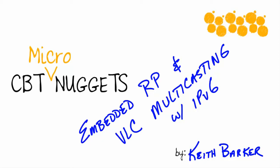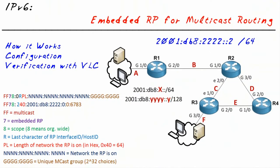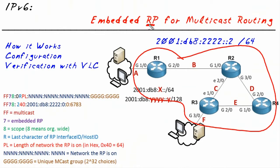Embedded rendezvous points and VLC multicasting using IPv6. Our objective in this micronugget is to identify how we can train this network to dynamically learn who their rendezvous point is without using BSR and without statically configuring that information on every single router.